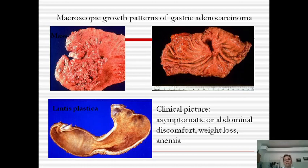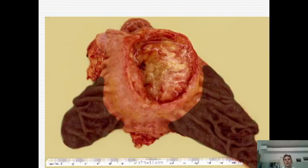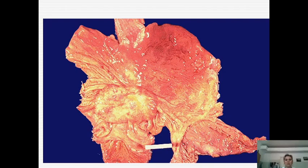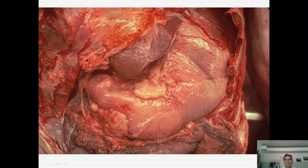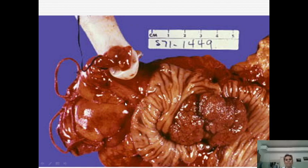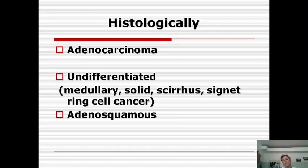In this slide you can see several photos of anatomical changes due to adenocarcinoma — different types: cancer as an ulcer, cancer as a plaque, and deformation of the stomach due to cancer, and cancer as a polyp. Histologically, adenocarcinoma is the most common type. The second most common is undifferentiated cancer with low differentiation — medullary, solid, scirrhous, and signet ring cell carcinoma. A rare form is adenosquamous cancer.